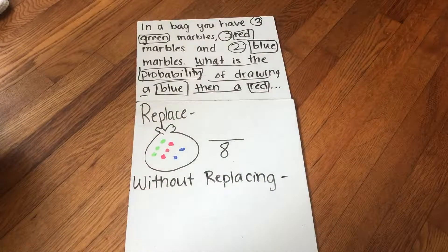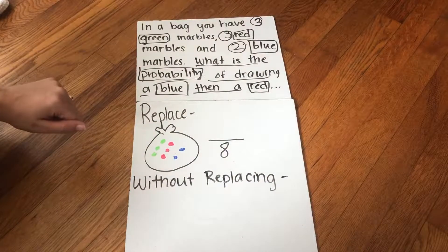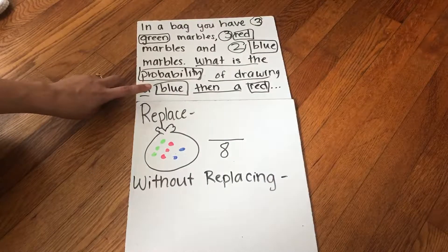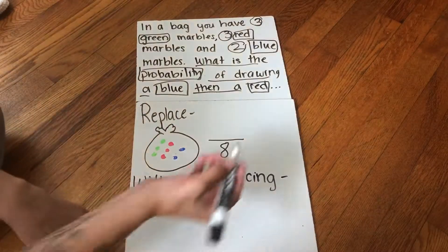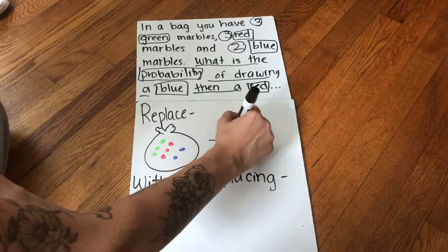All right, so the first question says, what's the probability of me drawing a blue? So I have two of those options out of the whole eight are blue. So I'd have two out of eight.